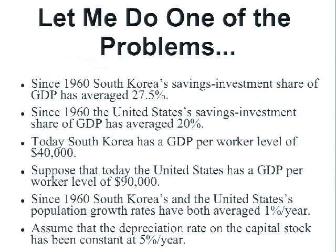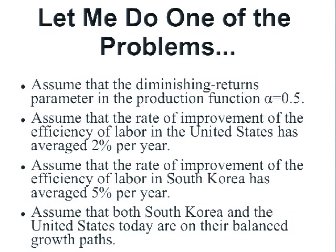I've changed a couple of the numbers a little bit, so you can't simply copy what I'm going to do down number for number — you have to figure out what's changed. The problem asks you to compare growth in South Korea and the United States and project them forward using our growth model, using standard assumptions for growth in an advanced industrial country: capital share parameter alpha equals 0.5, the rate of improvement in the efficiency of labor in the United States is 2% per year, and in South Korea it has averaged 5% per year since the economic reforms at the start of the 1960s under Park Chung-hee. Assume both countries are on their balanced growth paths and will stay on them.